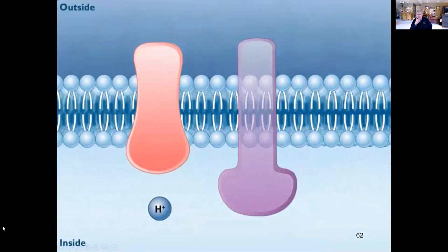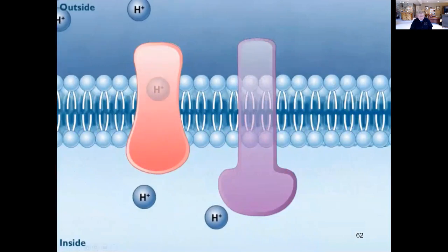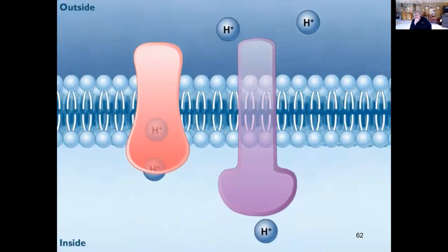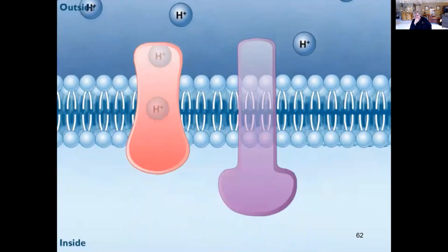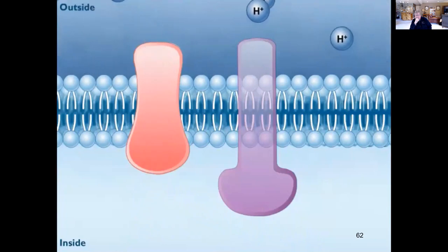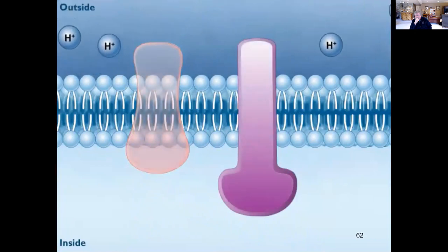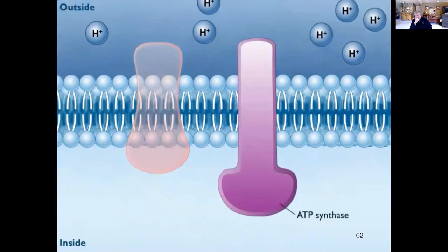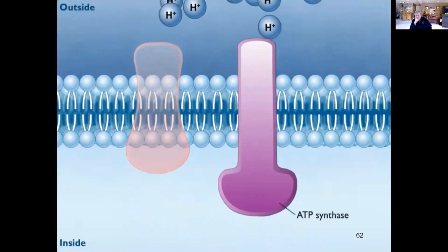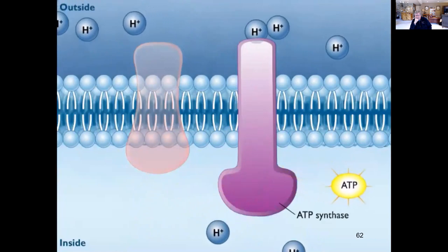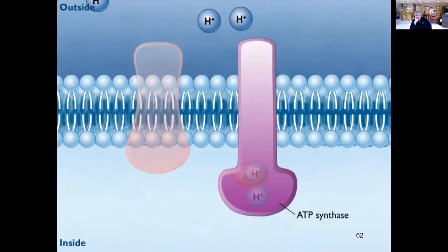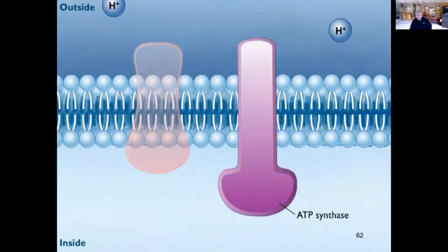Proton pumps move protons generated during oxidation reactions across the membrane, building up a concentration gradient. Since the membrane is not permeable to charged hydrogen ions, they must pass through ATP synthase. The movement of protons down the concentration gradient provides the energy for ATP synthase to form ATP. This is chemiosmosis, also called oxidative phosphorylation.